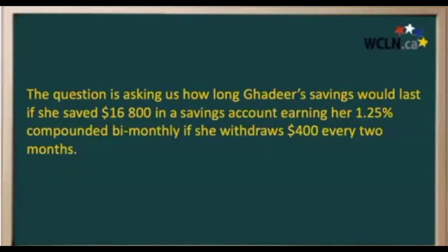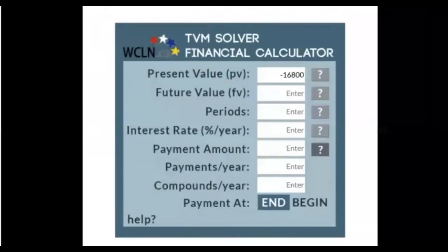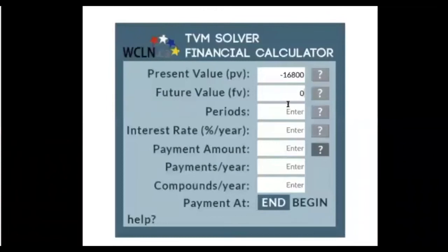Let's open up our TVM solver and calculate this. Since Vidir has been saving this money, it's been coming out of her pocket, so we have a negative value for our present value of negative $16,800. In the end, her future value will be zero because she'll have no money left in her savings. The period is the duration of the savings account, and that's what we're trying to find out, so we're going to leave that one blank for right now.